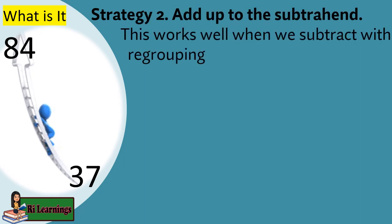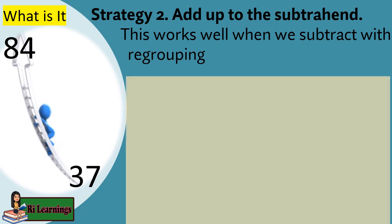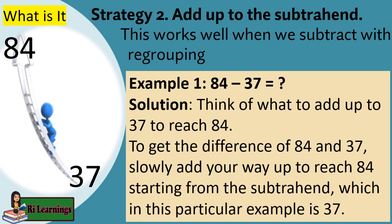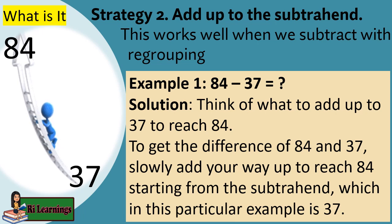Strategy 2: Add up to the subtrahend. This works well when we subtract with regrouping. Example 1: 84 minus 37. Solution: Think of what to add up to 37 to reach 84. To get the difference of 84 and 37, slowly add your way up to reach 84 starting from the subtrahend, which in this particular example is 37.